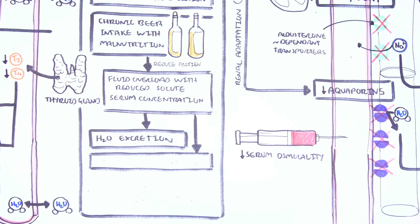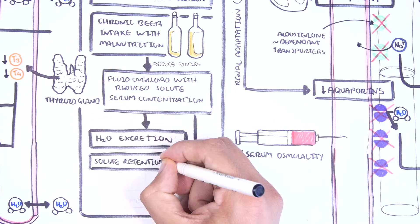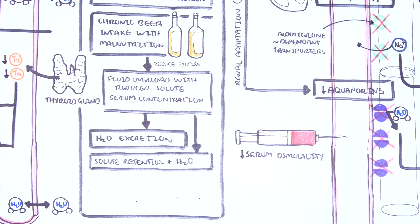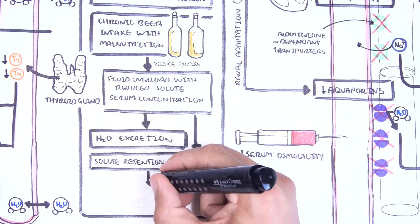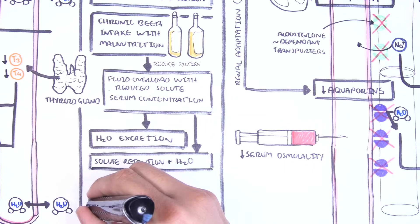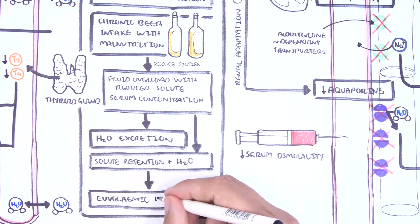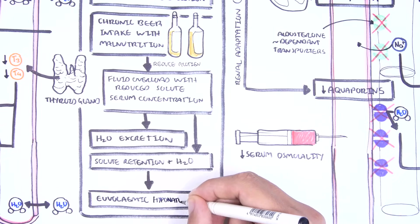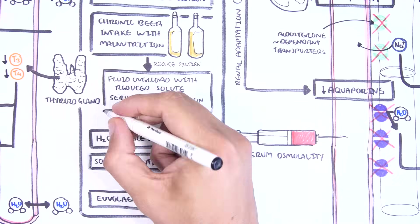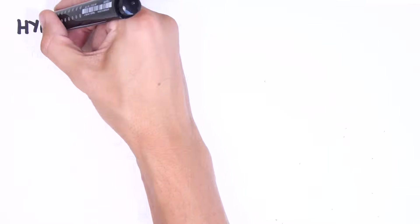At the same time, the body will try to retain the solutes as well as some water. As a result of this mechanism, you get euvolemic hyponatremia. The mechanism is a bit complex, but those are the key points.